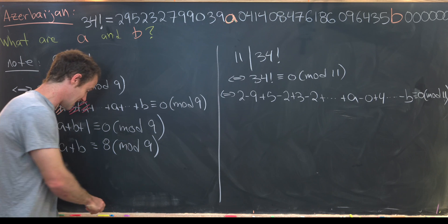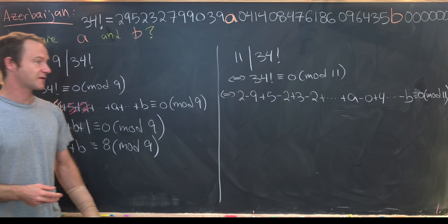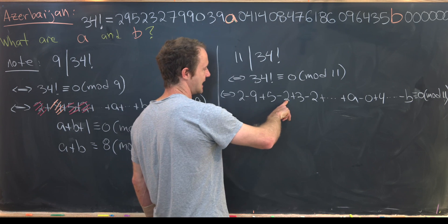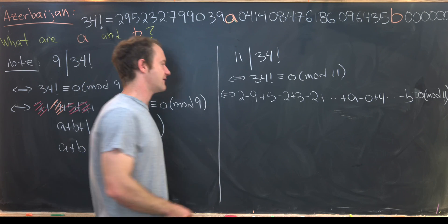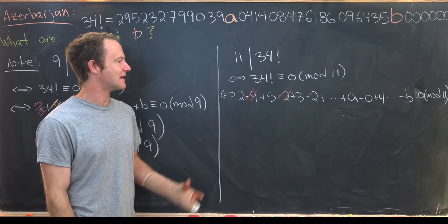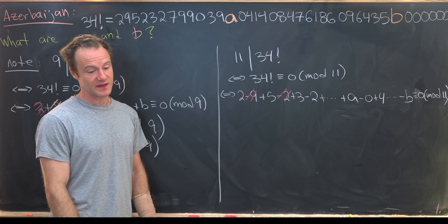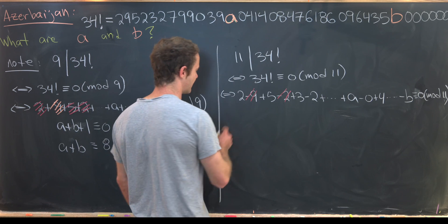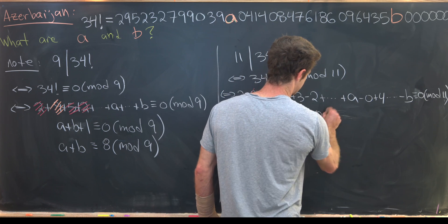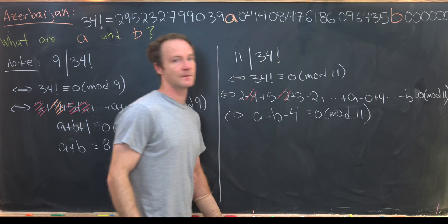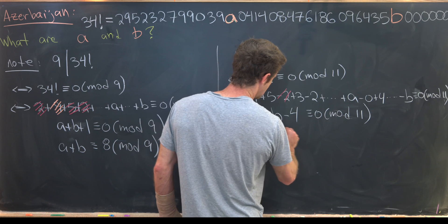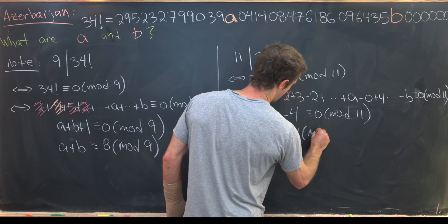Now we can play the same game that we did here and that is look for things that add to multiples of 11 and get rid of them. So notice here we've got negative 9, negative 2. That adds up to negative 11 so we can get rid of that. And then you can keep playing that game all the way down, getting rid of things that add up to 11 until you end up with the following congruence. You'll have a minus b minus 4 is congruent to 0 mod 11. Okay, but that tells us that a minus b must be congruent to 4 mod 11.